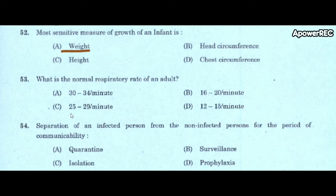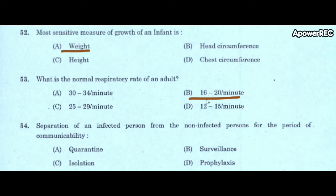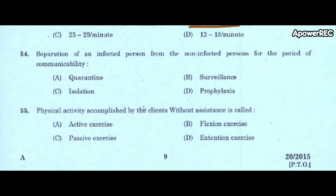Next question: what is the normal respiratory rate of an adult? A) 30 to 34 per minute, B) 60 to 20 per minute, C) 25 to 29 per minute, D) 12 to 15 per minute. Correct answer is 16 to 20 per minute. Normal respiratory rate of an adult is 16 to 20 per minute.